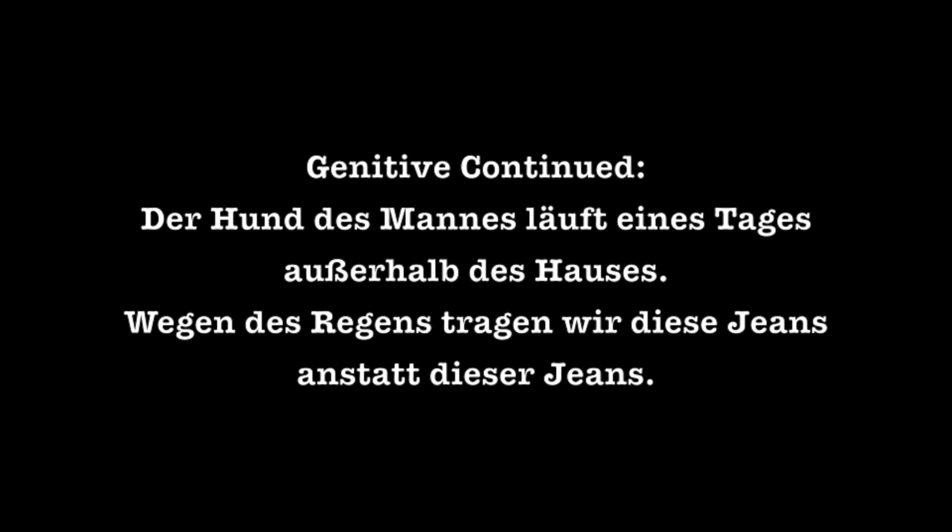Because of the rain, we are wearing these jeans instead of these jeans. Wegen is a genitive preposition, so when we start the sentence with wegen, we have to use a genitive object directly after that. Des indicates the genitive case, followed by Regens, which has an S at the end — because masculine genitive takes an S on the end of the noun. Wir is the subject, diese Jeans is the direct object. Anstatt is instead of, and it's also a genitive preposition, so we have to use the genitive plural diese instead of diese.